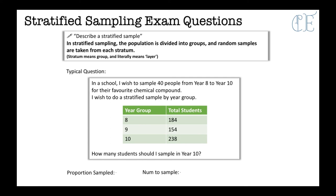In stratified sampling, the population is divided into groups, and random samples are taken from each stratum. So stratum means group and literally means layer. So you could say it like this. You could also describe it in your own words based on what you've learned today. If you would like to do that, and send me or comment on the video, describing your own words what you think a stratified sample is.